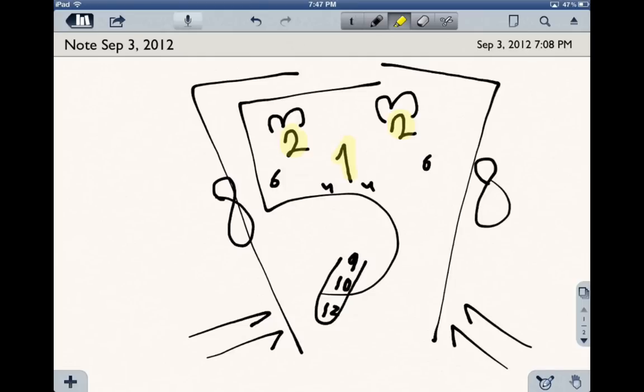Now, cranial nerve number four is a trochlear, and trochlear is a motor nerve that actually goes all the way to the superior oblique muscle.